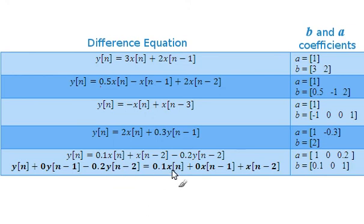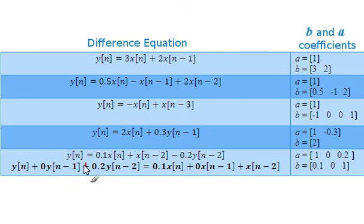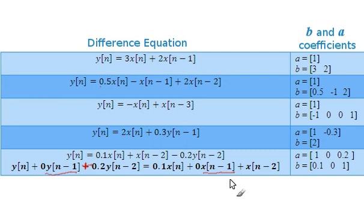Rewriting this difference equation, I've done two things: grouped all Y terms on the left-hand side and X terms on the right, and introduced the missing terms — Y(N-1) and X(N-1) — multiplied by 0. So mathematically the two equations are identical, but the rewritten form relates more easily to the B and A representation.